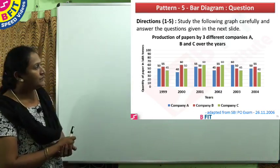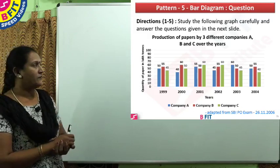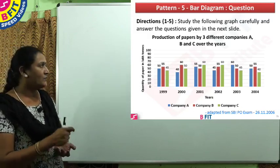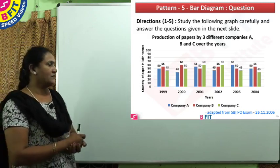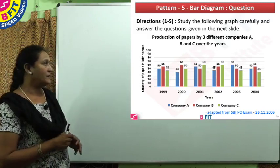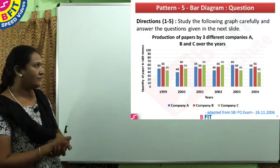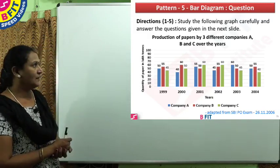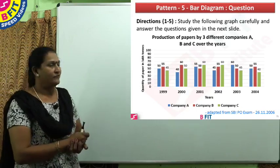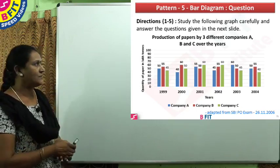Details of three companies are given: Company A, B, and C. On the Y axis, we have the quantity of paper in lakh tons. With this graph, we will answer the following questions.